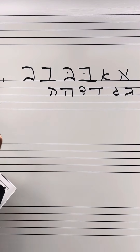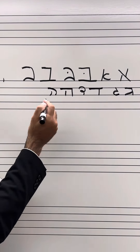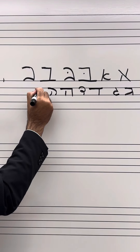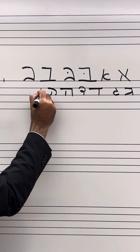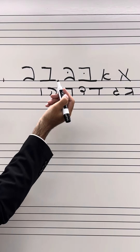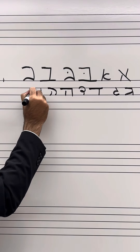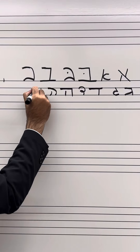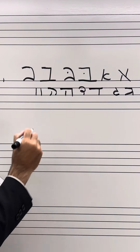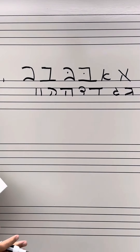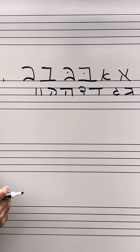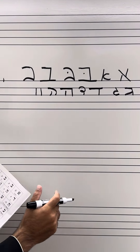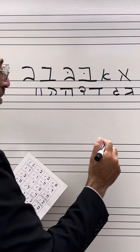Following that we have the Vav. The Vav is not that different from the other letters — it appears in the Torah like so, and it's going to appear in script as well just as a straight line going down.